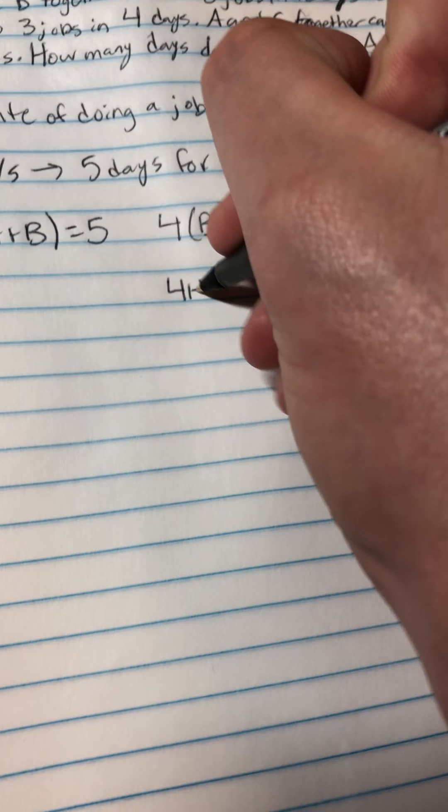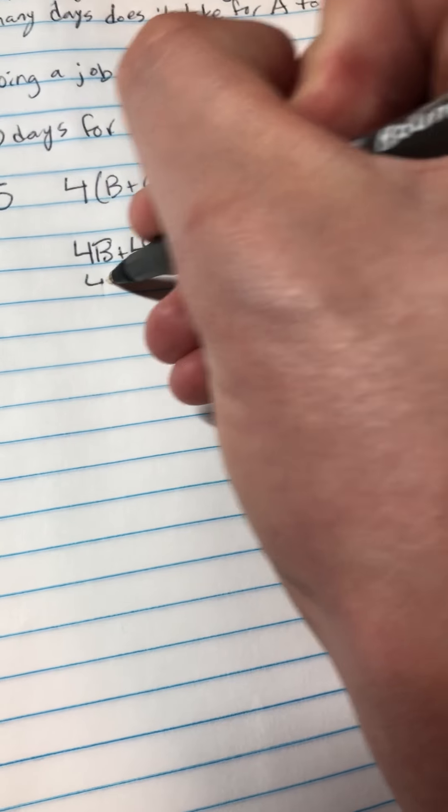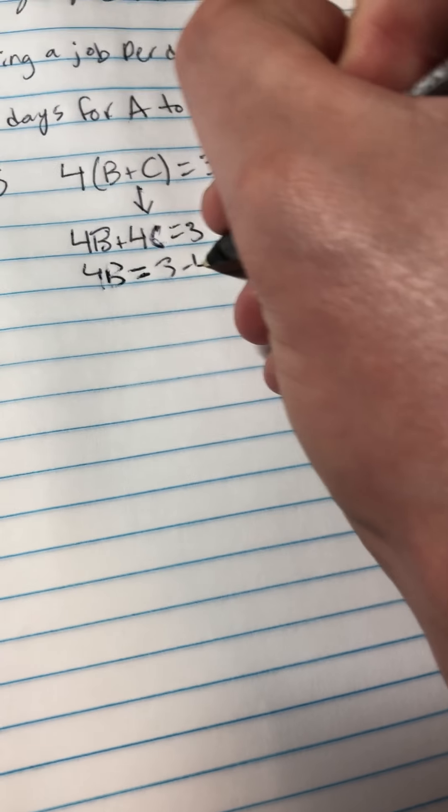So I wanted to find each of these variables so I could solve for this equation. For this one, I'm going to solve for B. So I would do 4B plus 4C equals 3, and then 4B equals 3 minus 4C.